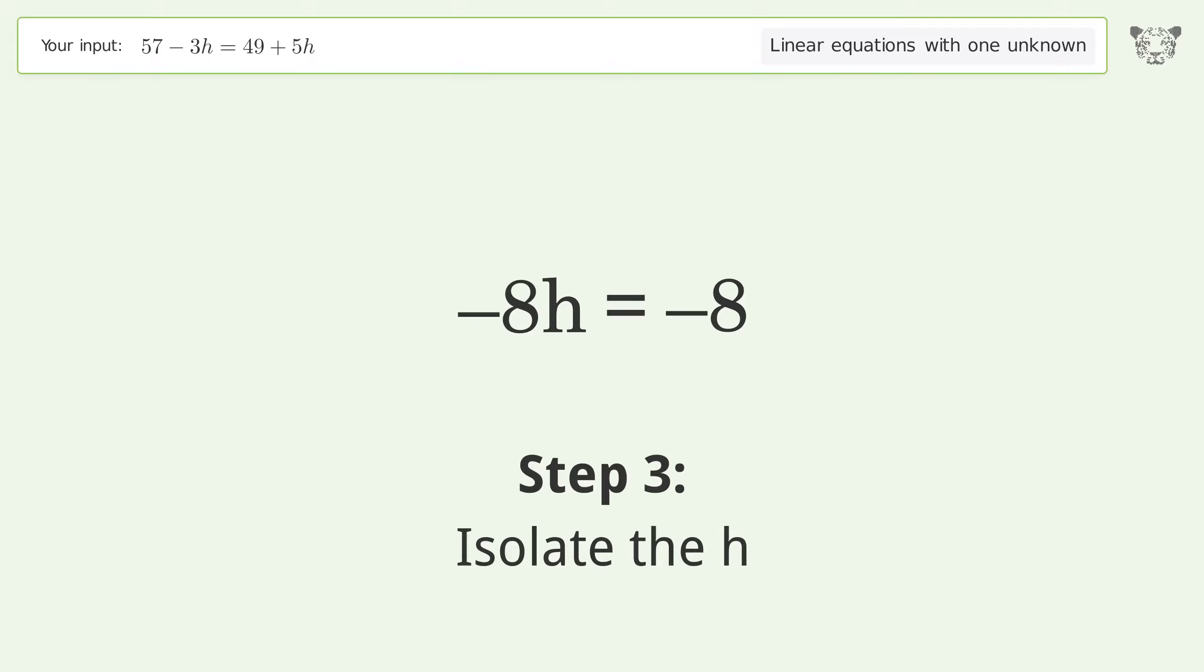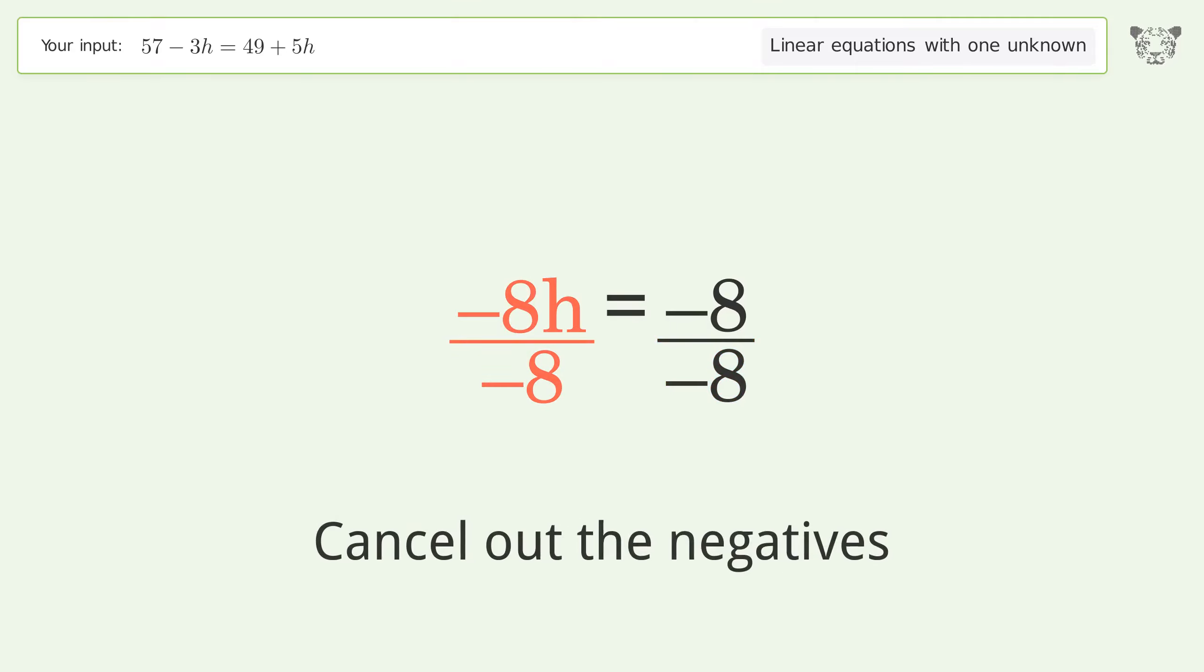Isolate the h. Divide both sides by negative 8. Cancel out the negatives. Simplify the fraction.